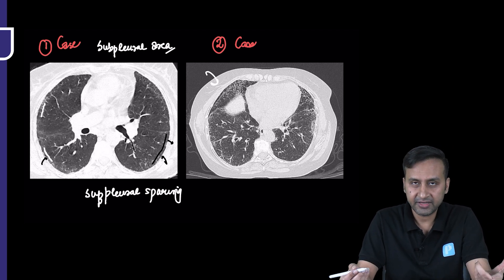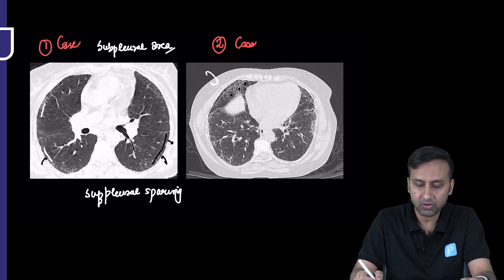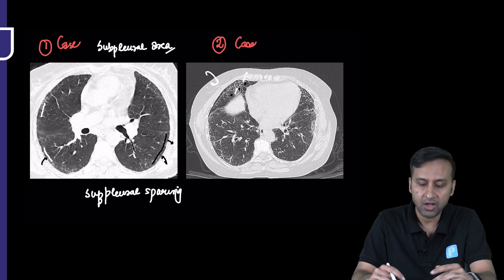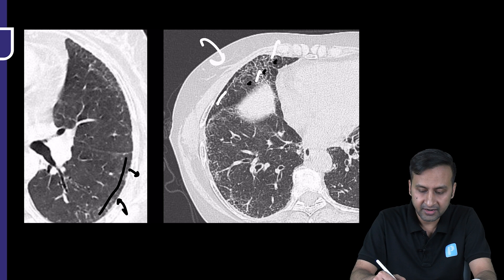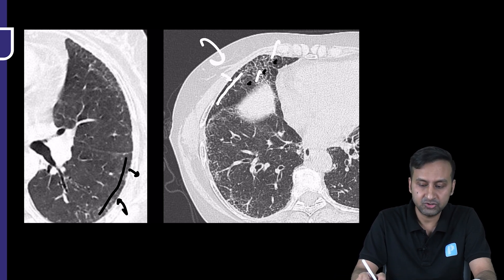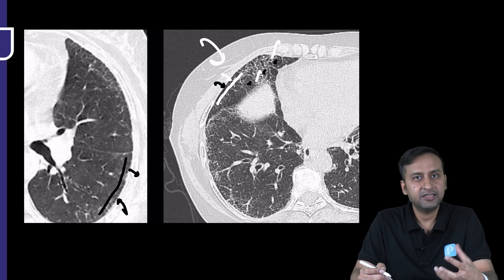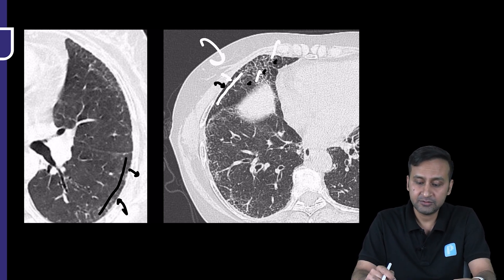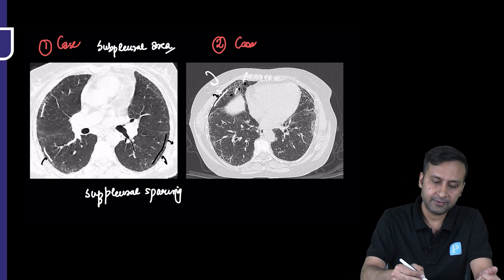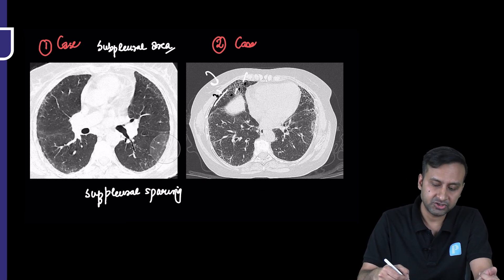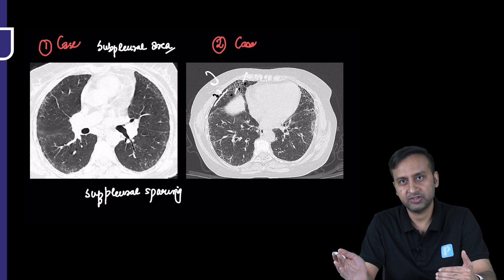The second case shows a more advanced, more fibrosing disease — we can see an extensive number of lines. But again in this case, a line can be drawn separating the diseased lung from the normal subjacent lung. The lung just underneath the pleura is completely spared of the disease process. This is what we call subpleural sparing — one important observation in addition to those already made.